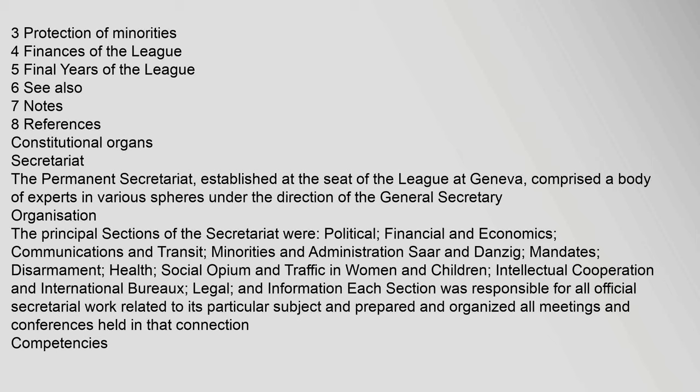The Permanent Secretariat, established at the seat of the League at Geneva, comprised a body of experts in various spheres under the direction of the General Secretary. The principal sections of the Secretariat were: political, financial and economics, communications and transit, minorities and administration, mandates, disarmament, health, social opium and traffic in women and children, intellectual cooperation and international bureau, legal, and information. Each section was responsible for all official secretarial work related to its particular subject and prepared and organized all meetings and conferences held in that connection.